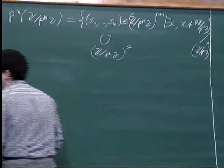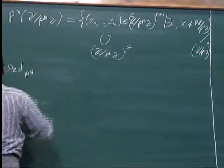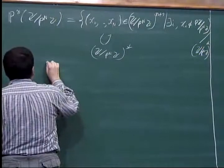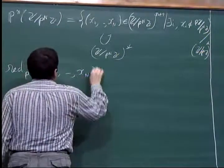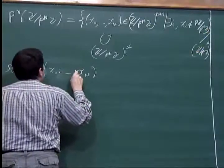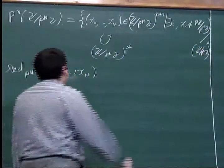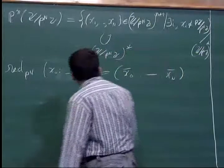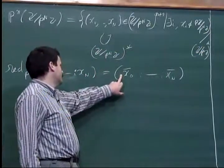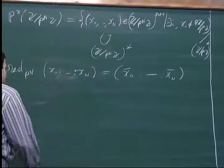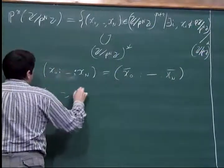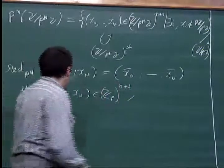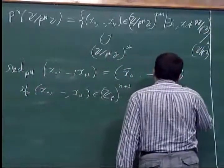How do I describe this map? The reduction modulo p^N from Q_p to Z/p^N Z is defined by the image of a point with homogeneous coordinates (x_0, ..., x_n), given by the point with homogeneous coordinates (x_0, ..., x_n) where this is the image in (Z/p^N Z)^{n+1}, and the GCD of the x_i's is equal to 1.